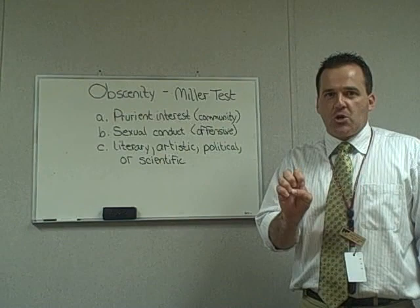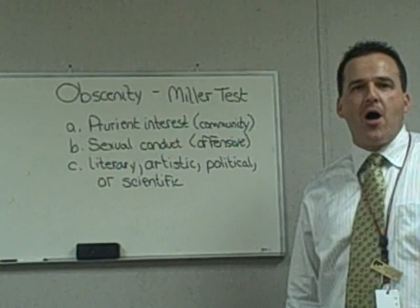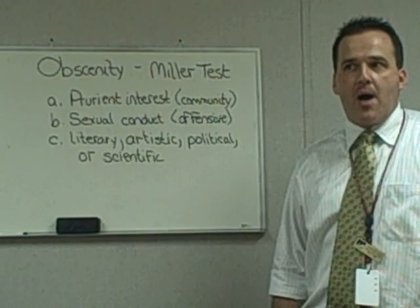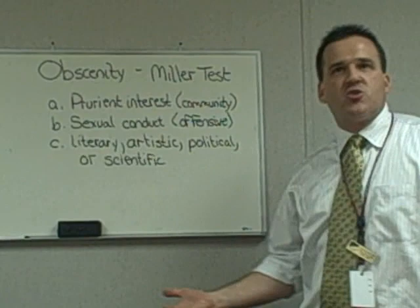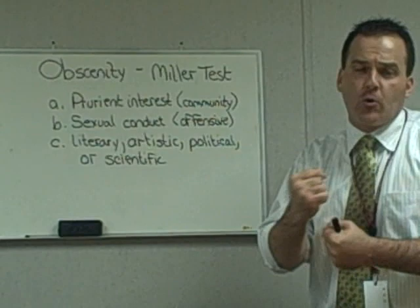The key with prong one is that it is based on individual community standards. Filming today in D.C., a big metropolitan area, a bit further north than North Carolina — North Carolina might have fairly moderate views on what would be obscene. D.C., being further north, is probably going to have more liberal views on what is viewed as obscene, and community standards in New York City are probably going to be further still. The further north you go, the more community standards tend to allow prurient or sexual type materials.